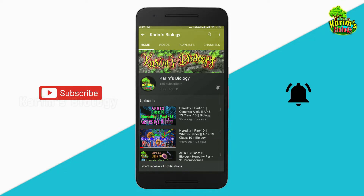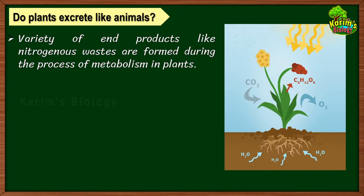The big question is: do plants excrete like animals? We have seen in animals, starting from protozoa to mammals, they are well organized and have their own excretory organs. Some have very simple excretory organs such as protonephridia and nephridia, whereas some have very complex excretory organs such as metanephridia and kidneys.